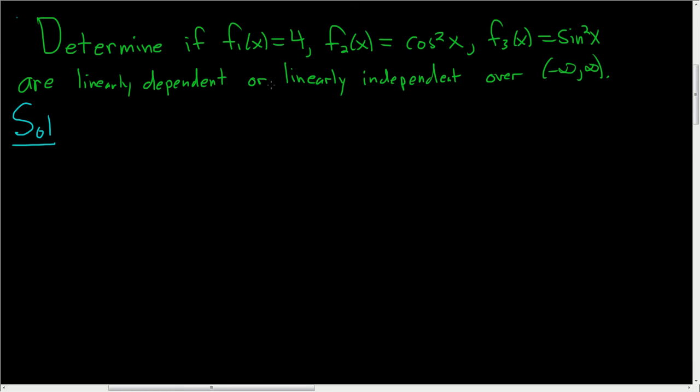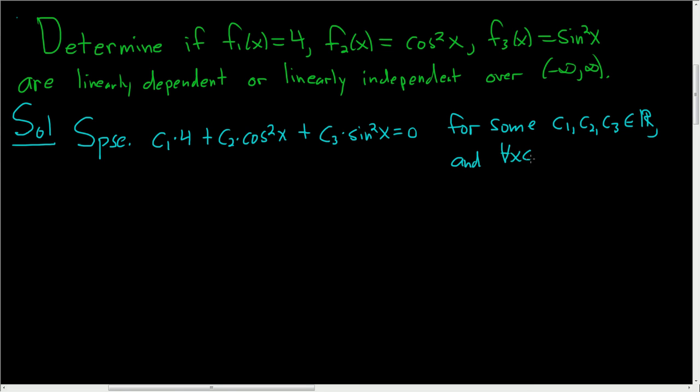We'll start by assuming that we have a linear combination of these functions, and it's equal to 0 for all x in R. So suppose that c1 times 4 plus c2 times cosine squared x plus c3 times sine squared x is equal to 0 for some c1, c2, c3 real numbers, and for all x in R. So this equation has to hold for every single real number x.